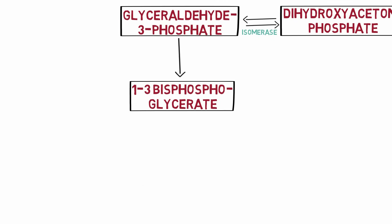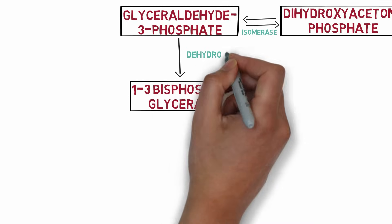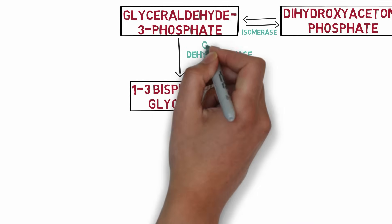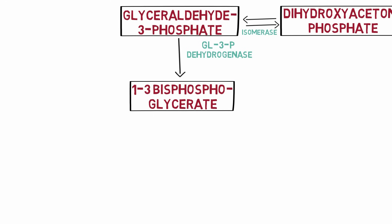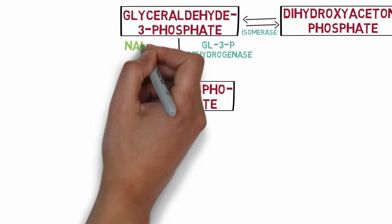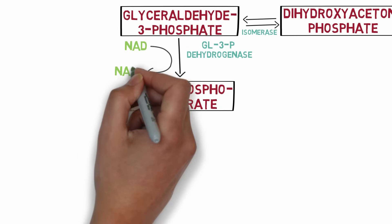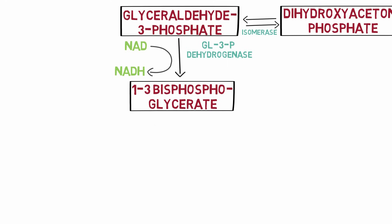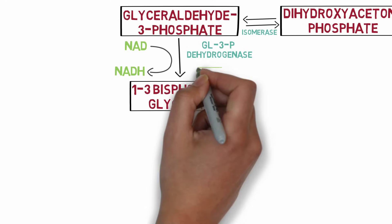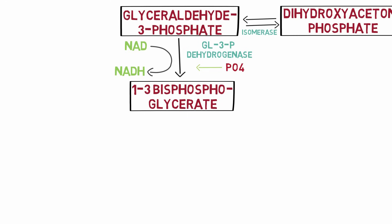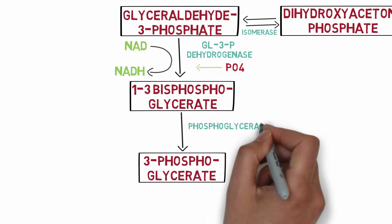In the next reaction, glyceraldehyde 3-phosphate is converted to 1,3-bisphosphoglycerate by addition of a phosphate group at the first position. The enzyme is glyceraldehyde 3-phosphate dehydrogenase. In this reaction, nicotinamide adenine dinucleotide (NAD⁺) is reduced to NADH, which is further utilized in the electron transport chain to produce more energy. This reaction also utilizes a molecule of inorganic phosphate.